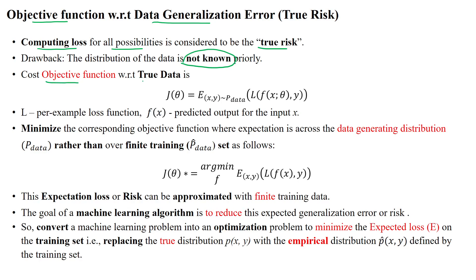The cost objective function defined for the true data distribution is J of theta equal to the expectation over x and y, where x is the number of features in the dataset and y is the target output with respect to the true data distribution. The loss is calculated for each and every sample — the difference between predicted output and actual output — and finally the total loss is calculated. That is the true data distribution and true data risk.